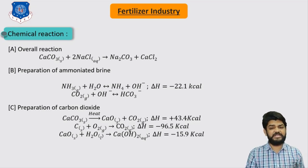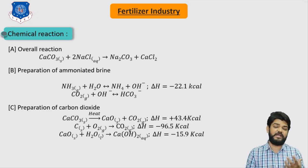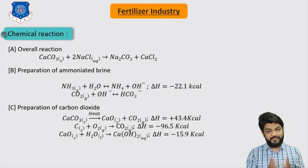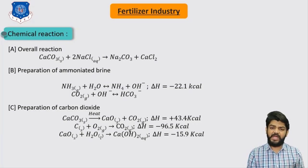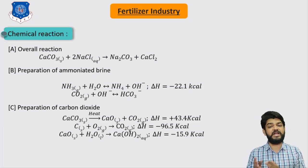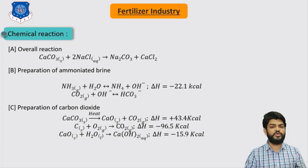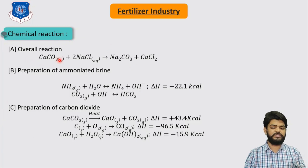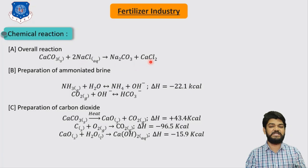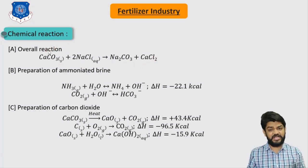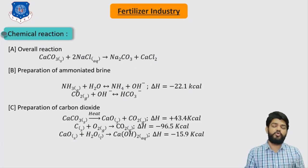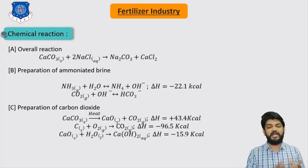Let us understand the chemical reactions taking place to produce sodium carbonate and sodium bicarbonate. These reactions are differentiated by stage of production. The overall reaction is: CaCO3 reacts with NaCl aqueous solution to produce sodium carbonate and CaCl2. Now let us understand the step-wise reactions to produce Na2CO3.